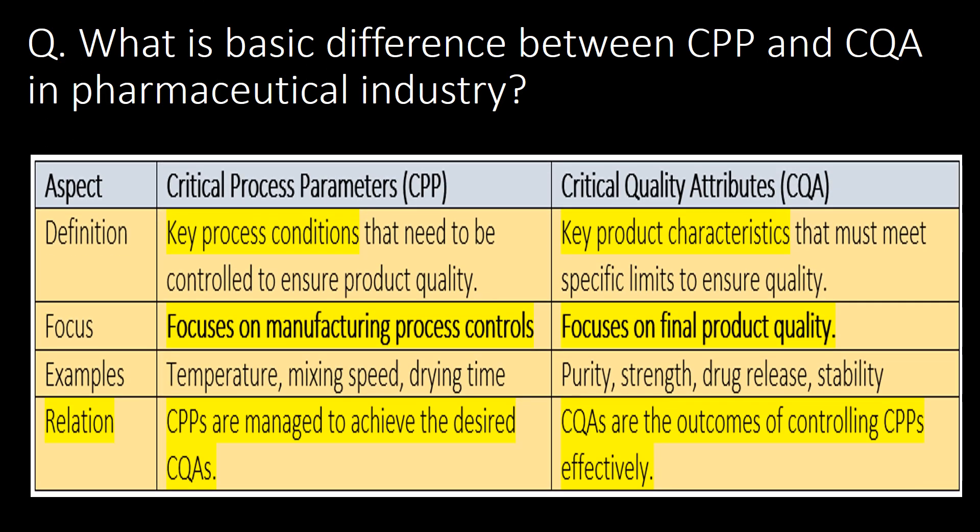What is the basic difference between CPP and CQA in the pharmaceutical industry? You can refer to the bullet table to differentiate between CPP and CQA in the pharma industry. The key difference is that critical process parameters are key process conditions that need to be controlled to ensure product quality, whereas CQAs are key product characteristics that must meet specific limits to ensure quality. CPPs focus on manufacturing process controls, whereas CQAs focus on final product quality.